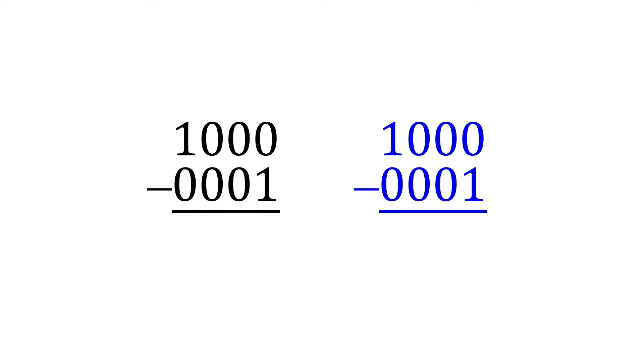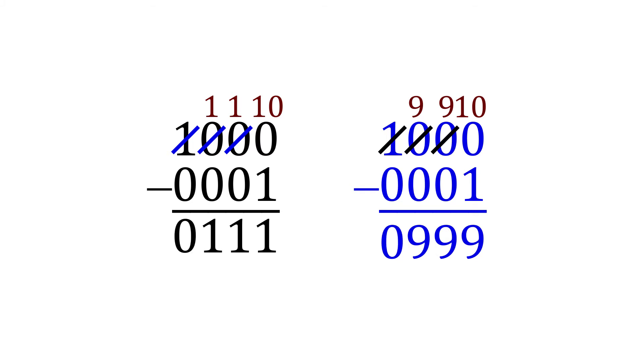We'll start with the decimal since that's more familiar. When we borrow from the thousands place, we leave a 9 in both the hundreds and tens place. Switching over to the binary, we do the same thing, but with 1's instead of 9's. Now we subtract as normal. So our binary answer is 111, and the decimal answer is 999.